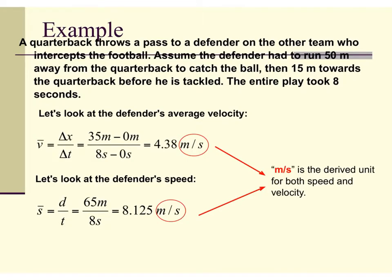Here we have an example problem that asks us to solve for both velocity and speed so that we can see the difference between the two. The quarterback throws a pass to a defender who intercepts the football. The defender ran 50 meters away from the quarterback to catch the ball and then 15 meters back towards the quarterback before being tackled. The entire play was 8 seconds. The defender ended up 35 meters away — 50 meters out minus 15 meters back — and dividing by 8 seconds gives us a velocity of 4.38 meters per second.